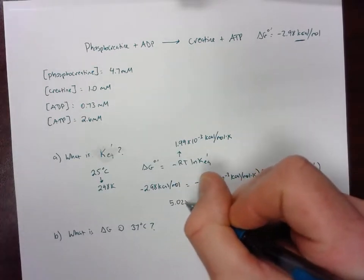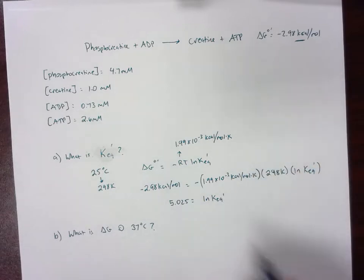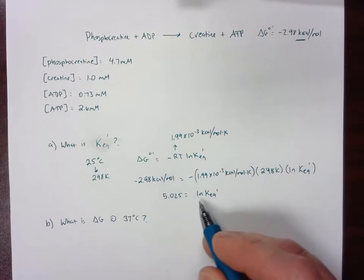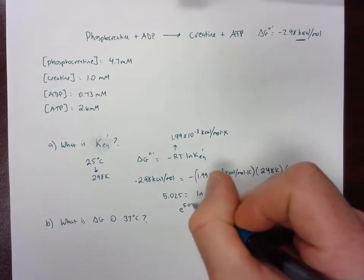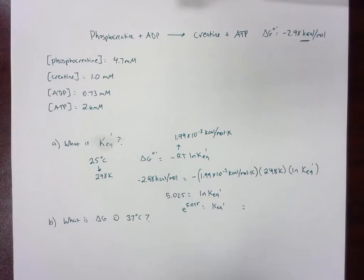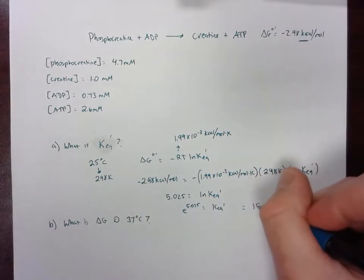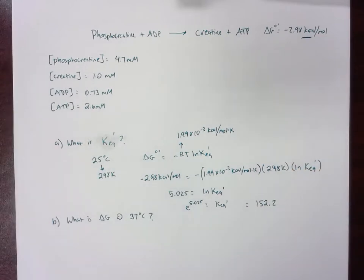So when we do this, we want to divide out what's on the right-hand side, and we are going to get 5.025, which equals natural log KEQ. Now we need to get rid of that natural log term. So in order to do that, we take it to the exponent. And that is going to equal 152.2. So that's our KEQ.